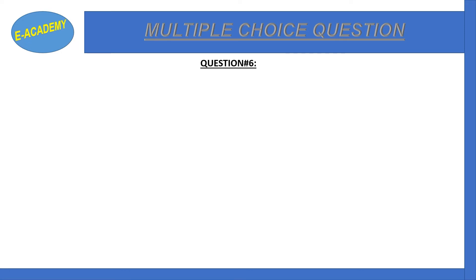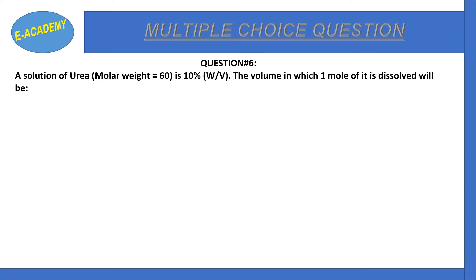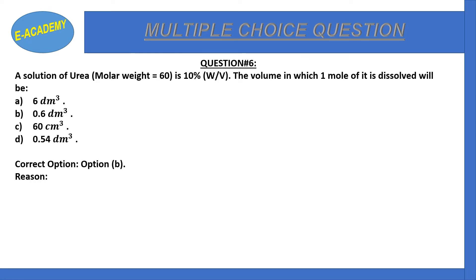Question number 6: A solution of urea whose molar weight is 60, is 10% weight by volume. The volume in which one mole of it is dissolved will be: a) 6 dm³, b) 0.6 dm³, c) 60 cm³, d) 0.54 dm³. Correct option is b) 0.6 dm³.